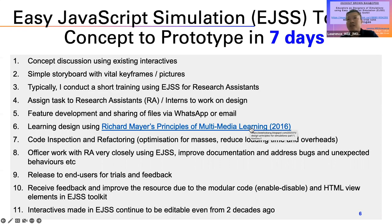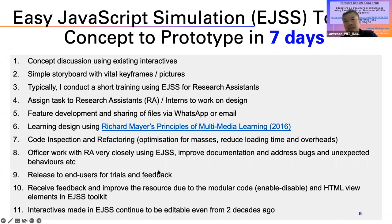For those interested in the more theoretical side, these are some design principles I've used. The officer — probably you or me — will work closely using EJSS to develop the interactive, address bugs and unexpected behaviors, then release it to users on SLS to collect feedback. With that feedback we can improve the resource quickly because EJSS is modular — you can simply enable or disable a particular page, and that code becomes frozen or enabled depending on how you toggle it.